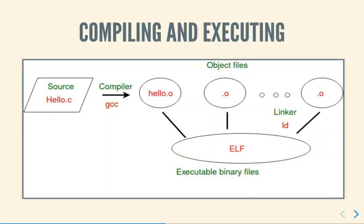What happens when you write, compile, and execute a program? At the highest level, you start by writing a program source code — let us call it hello.c. You use a compiler whose first job is to convert that into object code. It creates a file which usually has an extension .o in Unix-based systems, and this is a set of instruction codes in the instruction set of the target processor — that is, the machine language instructions.